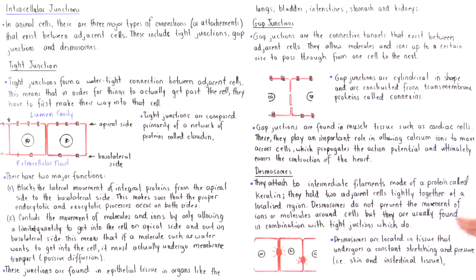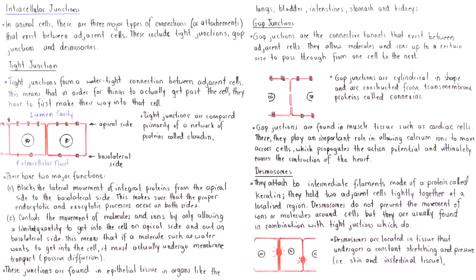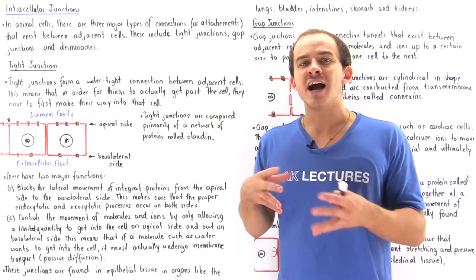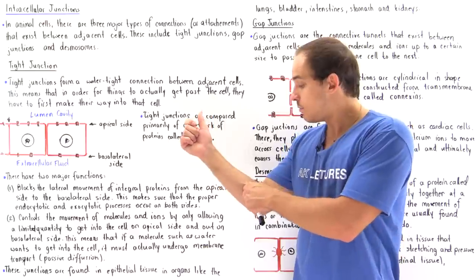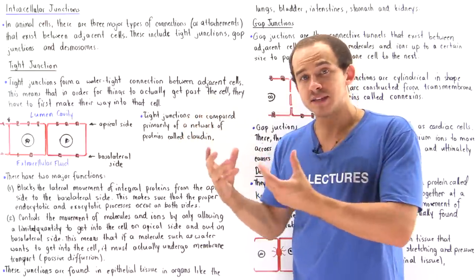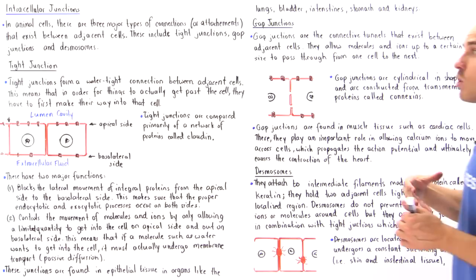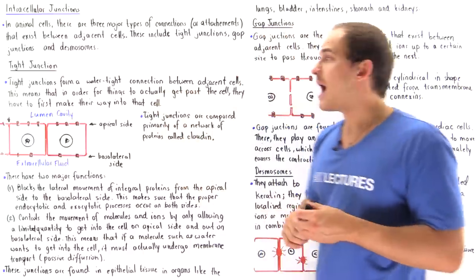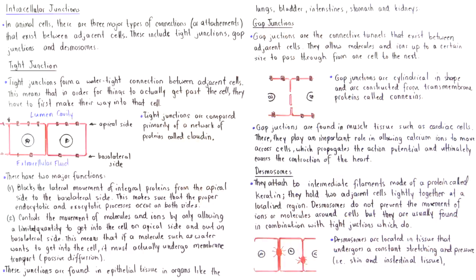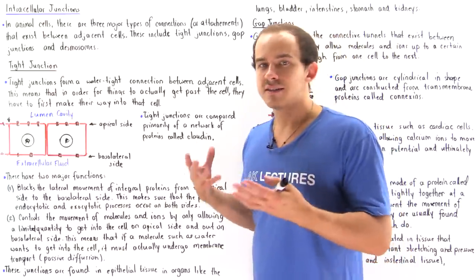Where exactly do we find desmosomes? Desmosomes are located in tissue that undergoes a constant state of stretching and experiences constant pressure. One example is the skin — when you pull your skin, what keeps the cells together are desmosomes, and what prevents water from getting inside are the tight junctions. Another location is intestinal tissue, and we'll see why they're important when we discuss the intestinal system.